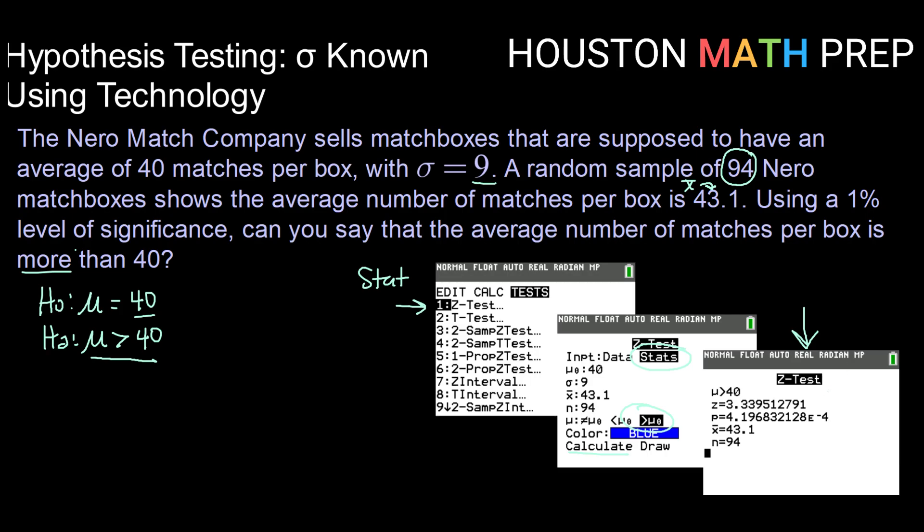So notice it actually calculates your test statistic, or your z star. We calculated those by hand in previous videos, so there it is. And then it gives you a p-value. Notice here it says 4.196, and then it has this e-4. That means we have 0, or we have point, and then we have three zeros, 4, 1, 9, 6, and so on. So that's our p-value.